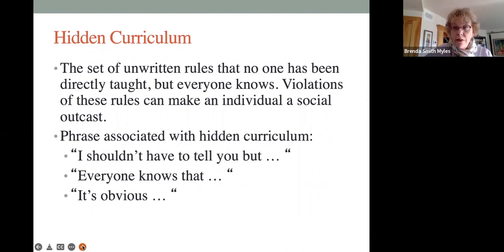The hidden curriculum. The hidden curriculum is the set of rules, unwritten rules, rules that no one is directly taught, but everyone who is neurotypical knows. It is information that is supposedly dropped out of the sky and it's hit neurotypical folks, but it's missed autistic folks.